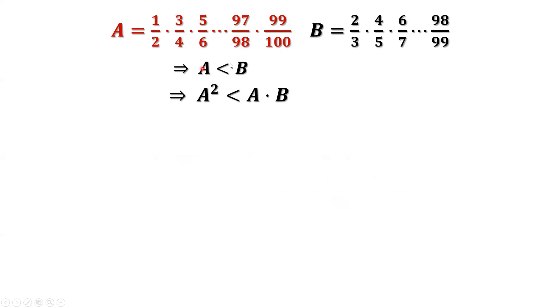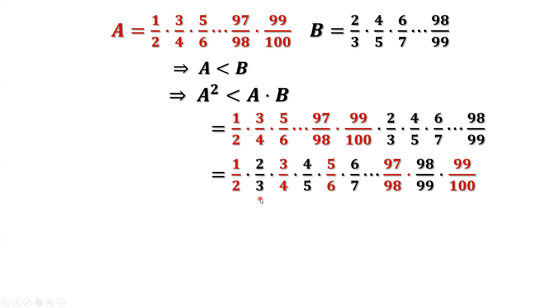Both sides times capital A. Then we have A squared less than A times B. What is the product A times B? We can rearrange these terms in ascending order by the numerator. 2 and 2 can be cancelled out. 3 and 3 are cancelled out. 4 and 4 are cancelled out, until 99 and 99 are cancelled out. Only thing left is 1 over 100.